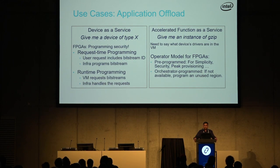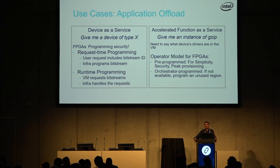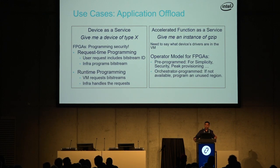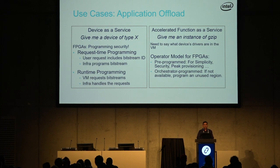The other approach is what we call orchestration-driven programming, which is basically the holy grail: the user asks for gzip, orchestration looks for a free gzip instance somewhere in the cluster, and if it doesn't find one, it finds a blank FPGA, reprograms it to the right bitstream, and exposes it to the user. From the user's point of view, they asked for a function and got it — all the details are left to orchestration. We want to include all of these use cases in any orchestration framework, whether it's OpenStack or Kubernetes.